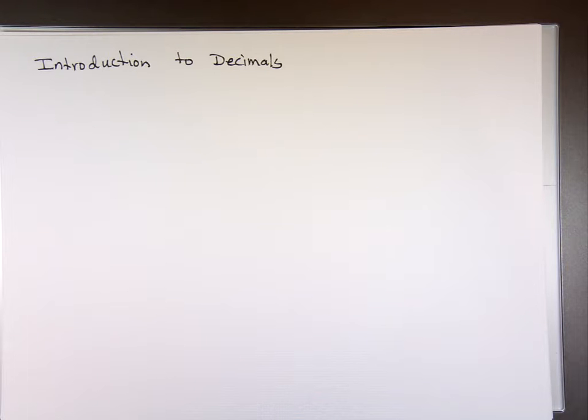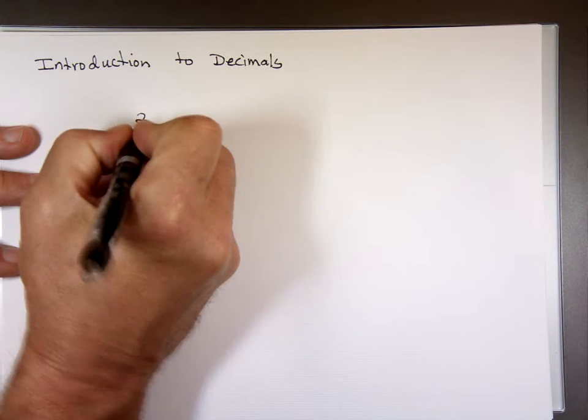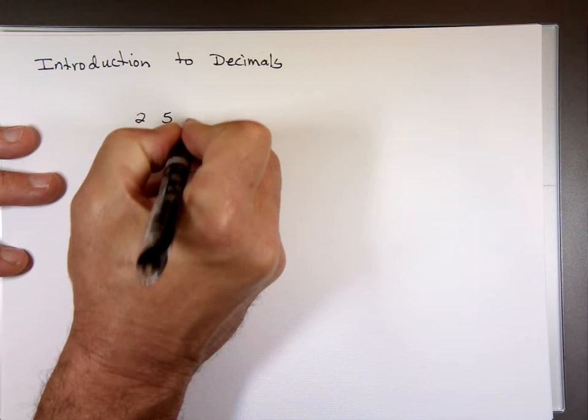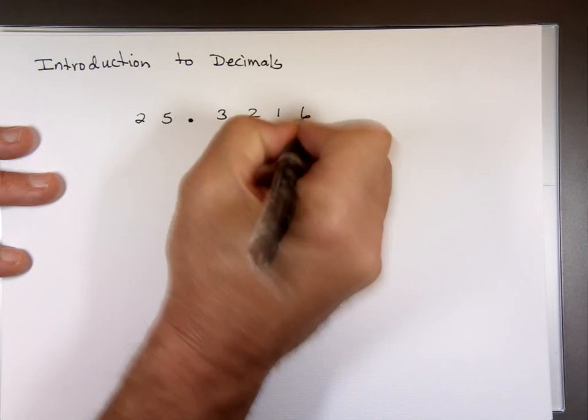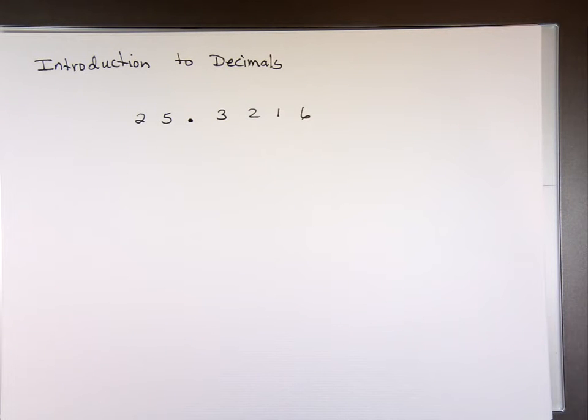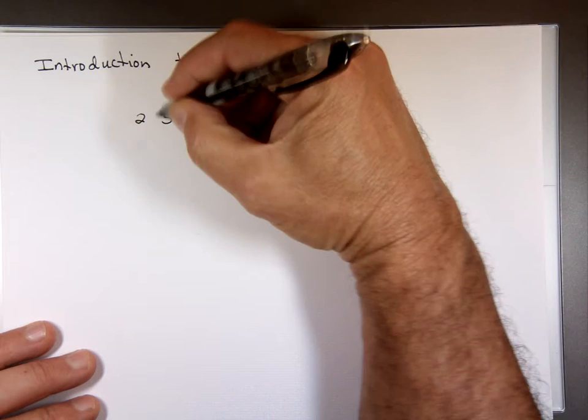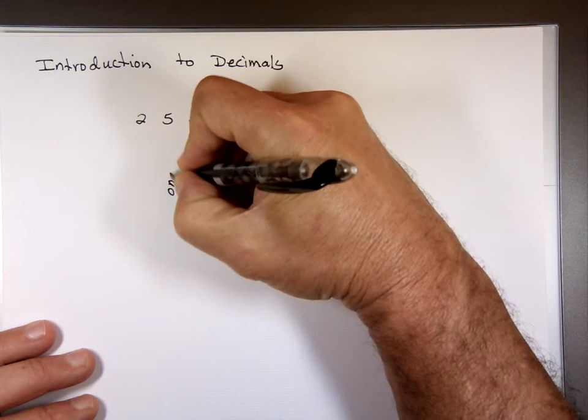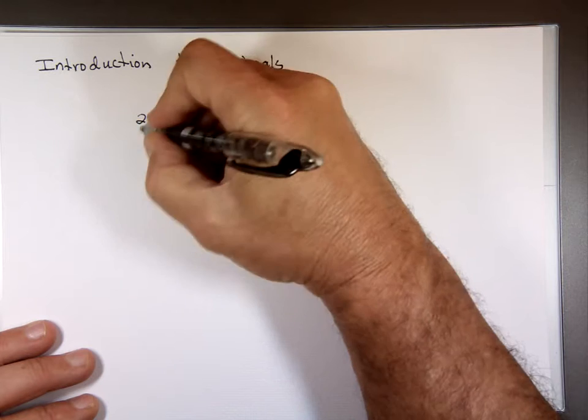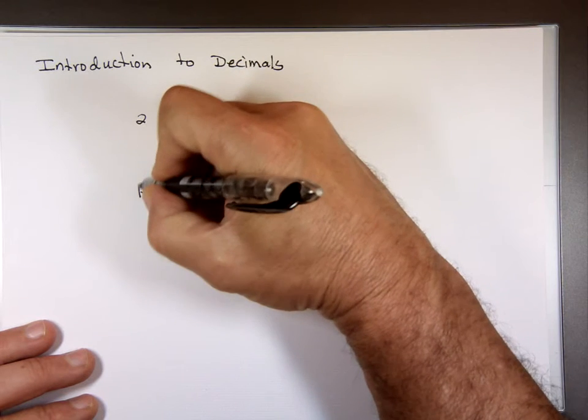When you write a number like this one, now you and I will always say 25.3216, something like this. Now, if you remember from before, to the left of the decimal point, we call this what? The ones. We call the two, the digits here, what? The tens.